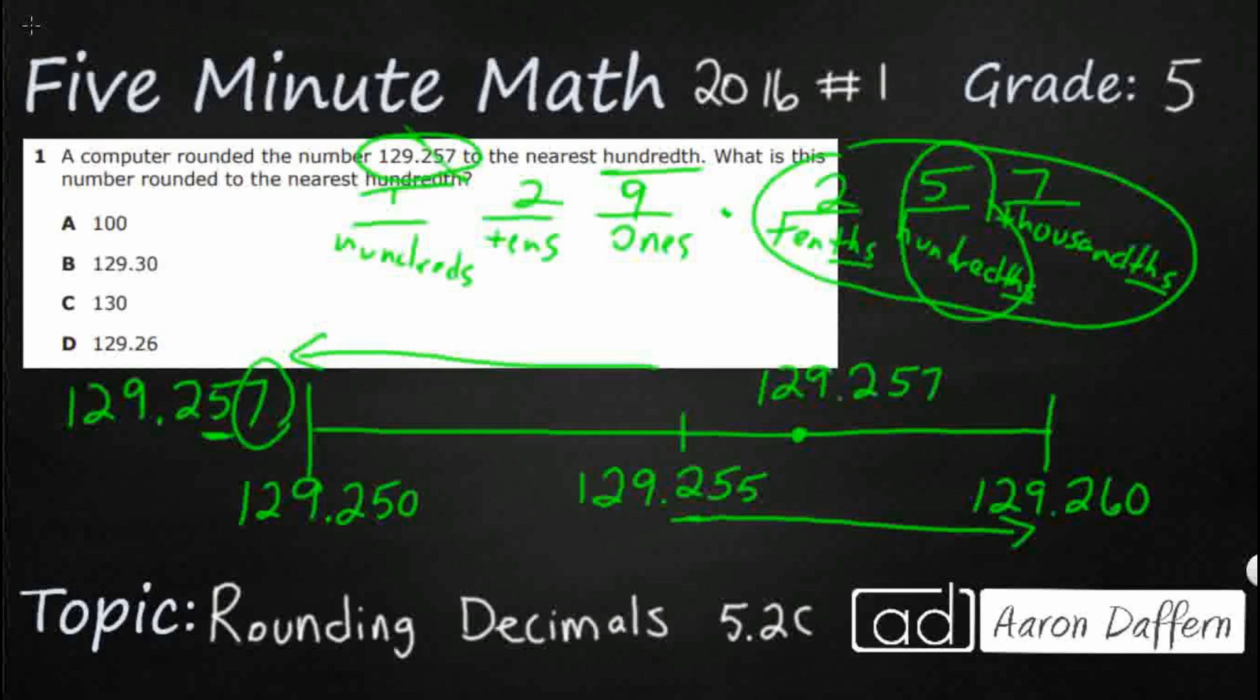And there's two rules here. If it's five or more, five or more, you go up. If it's four or less, you go down.